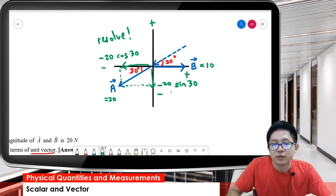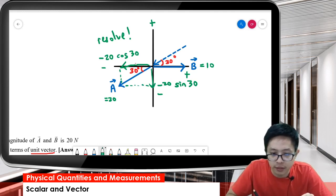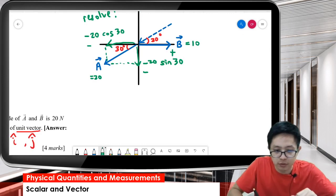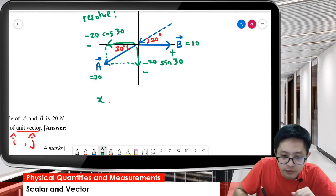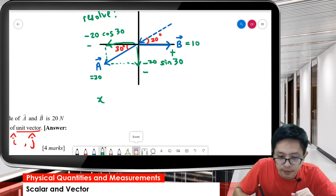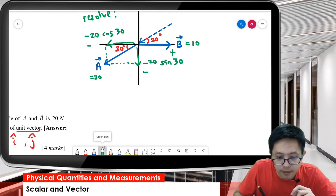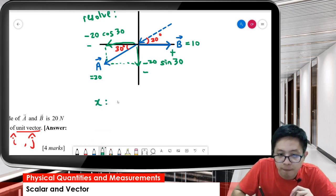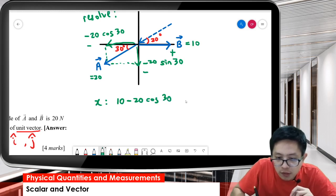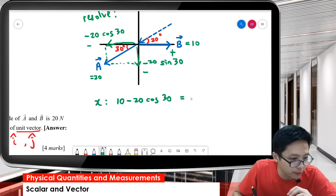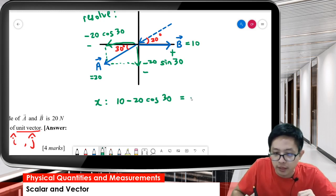Now we already have all the vectors in x and y component. For the x component, we have 10 minus 20 cos 30. Using the calculator, we get negative 7.32. This is i.